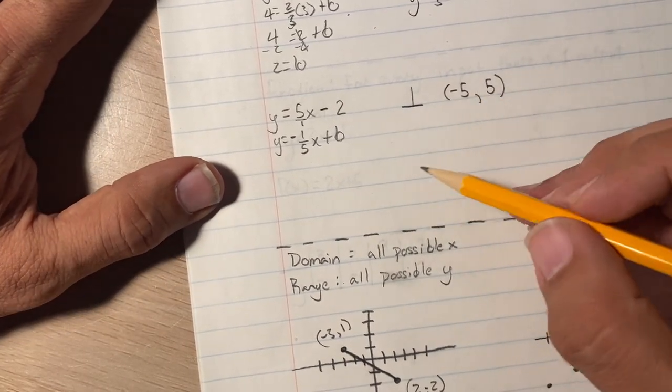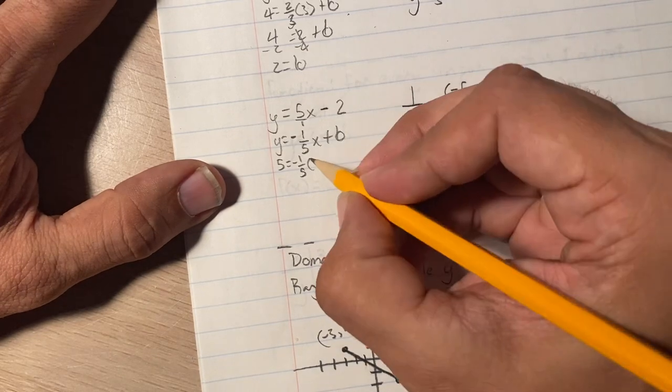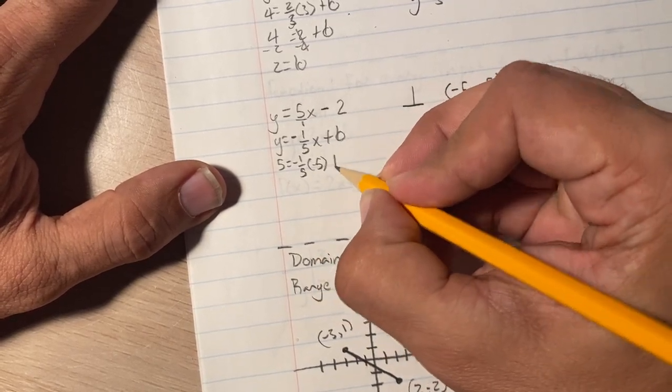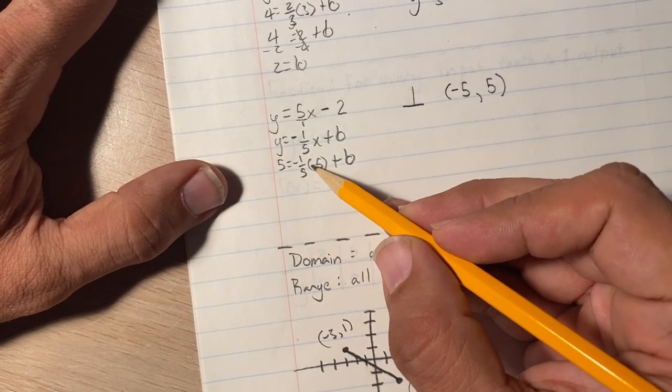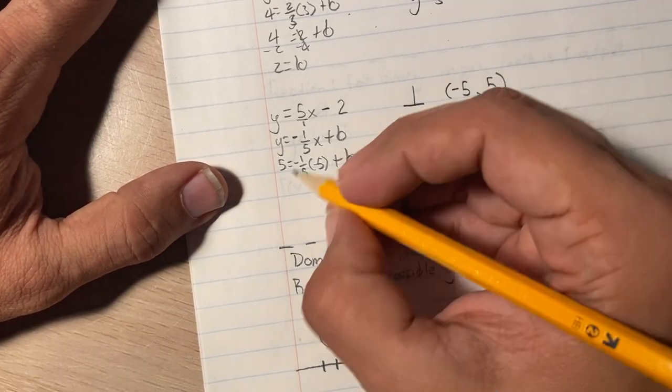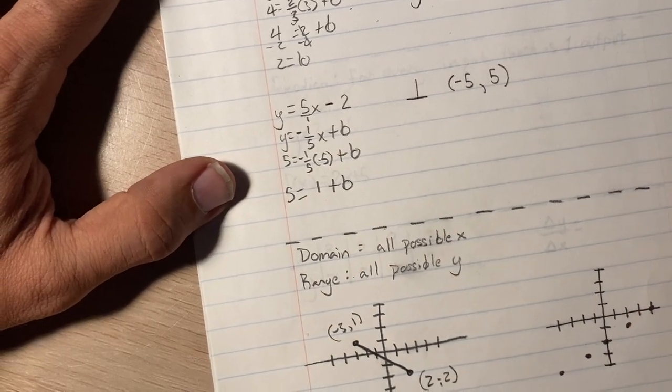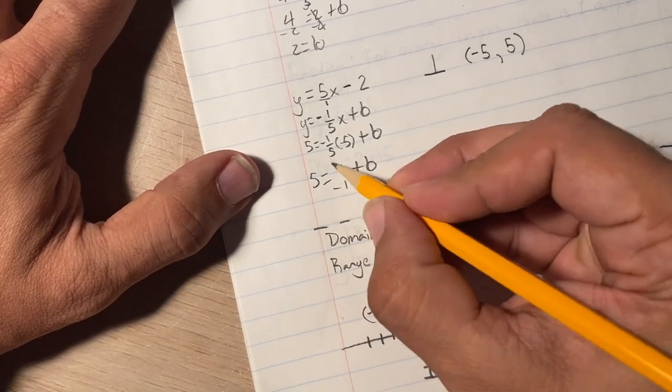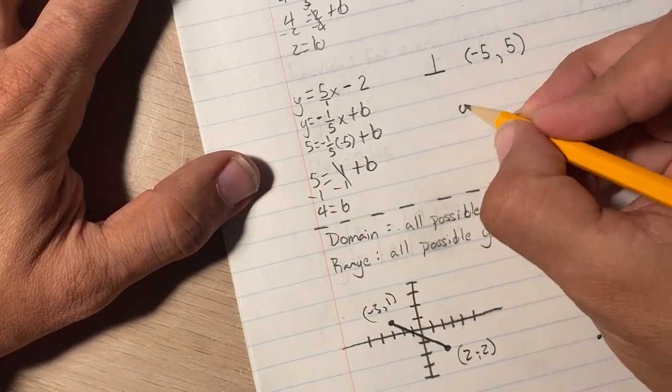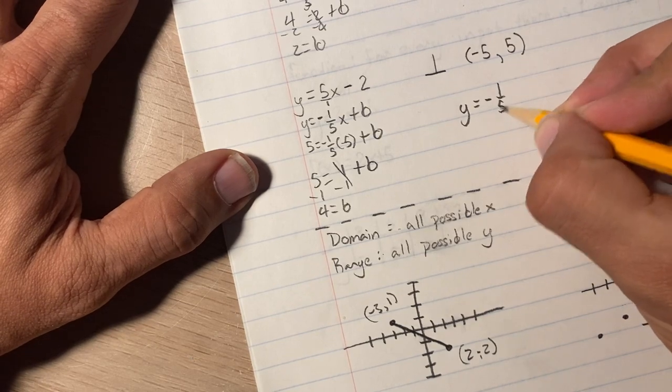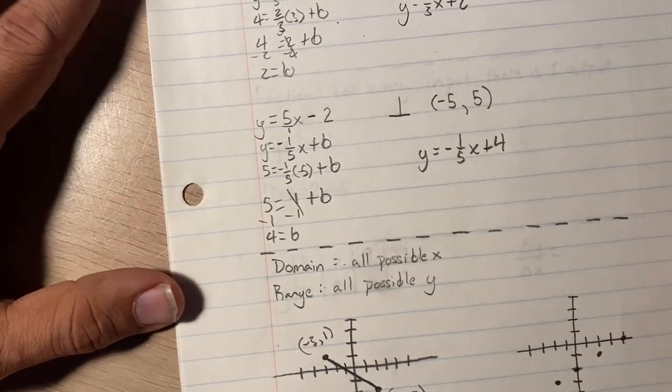Now, we're going to plug in these numbers. So now it's going to be 5 equals negative 1 over 5, negative 5 plus b. So negative 1 times negative 5 is just 5. 5 divided by 5 is 1. So this is going to be 5 equals 1 plus b. Then we're going to subtract 1 from both sides. We're left with 4 equals b. Now that I know what b equals, y equals negative 1 over 5x plus 4. And that's done.